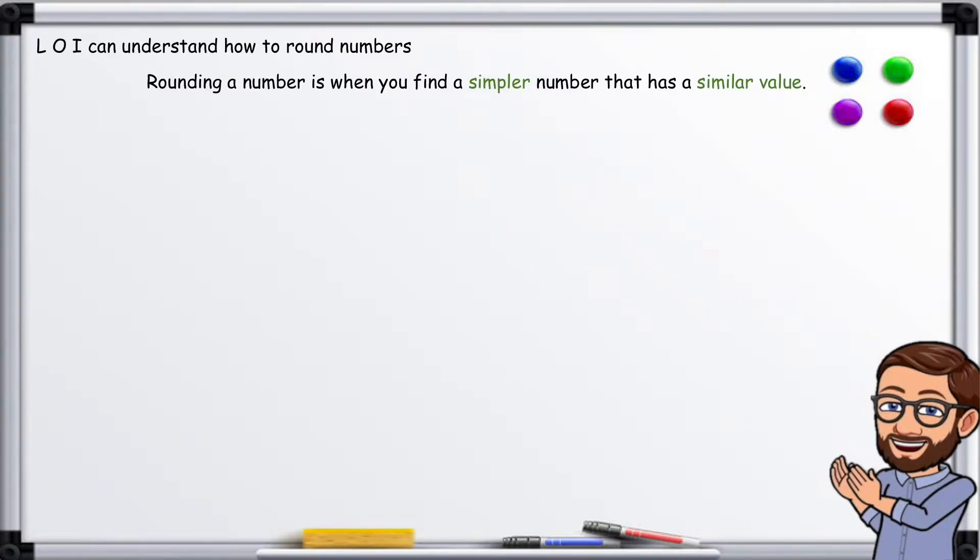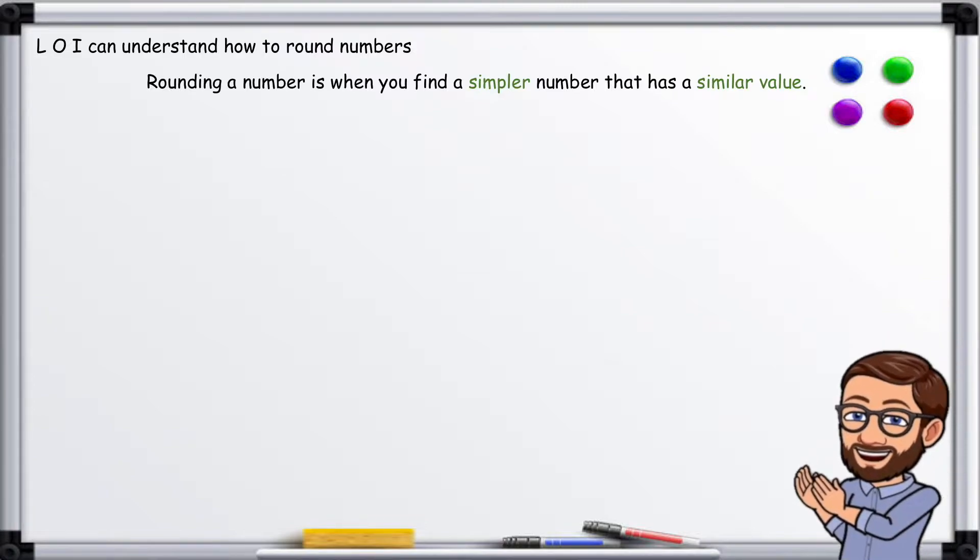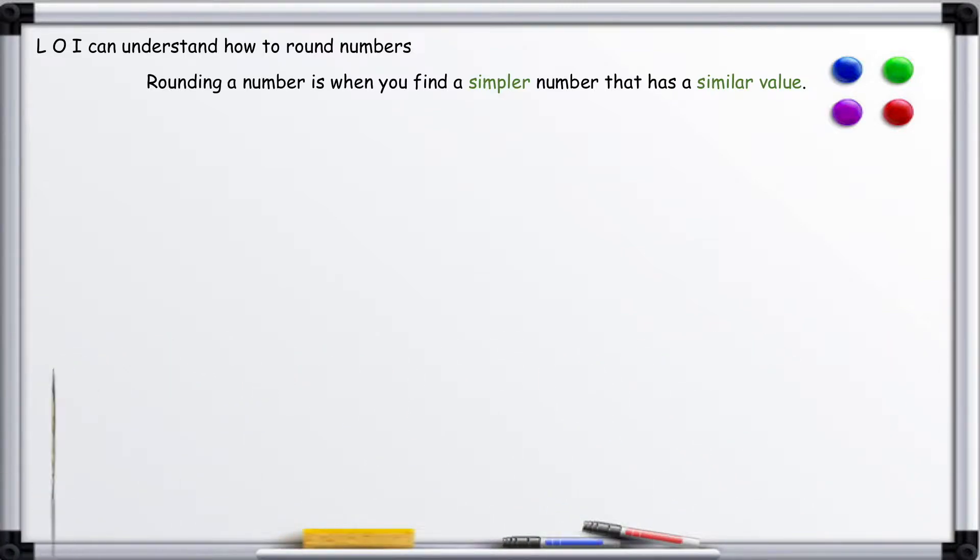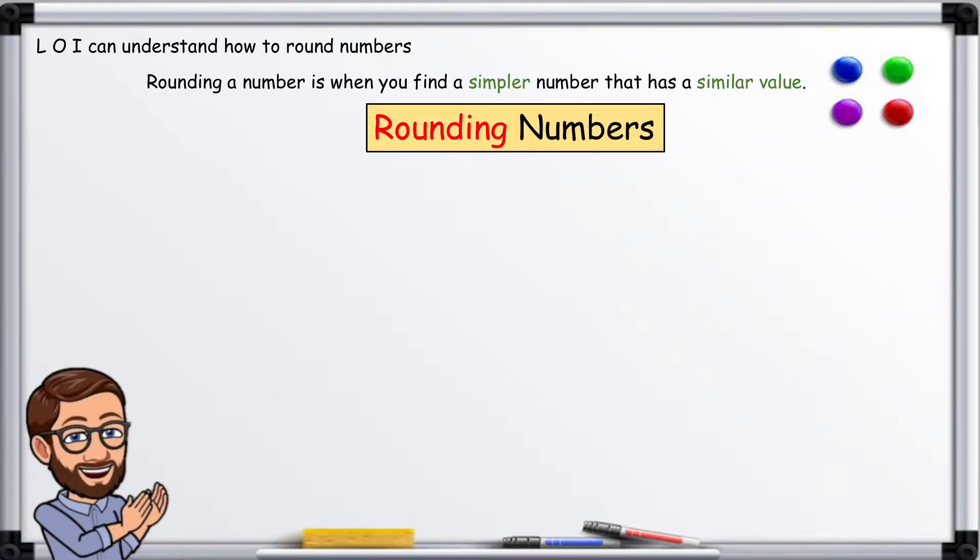Rounding a number is when you find a simpler number that has a similar value. Rounding numbers.